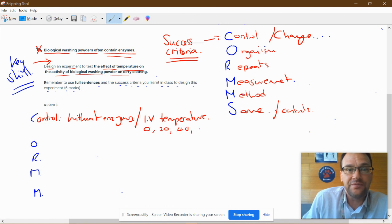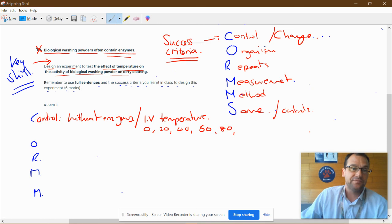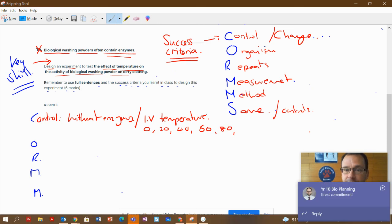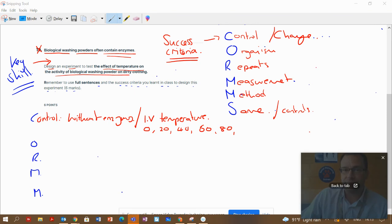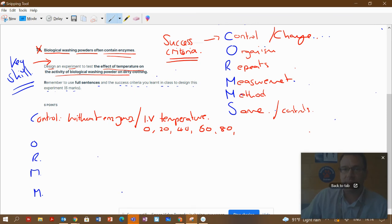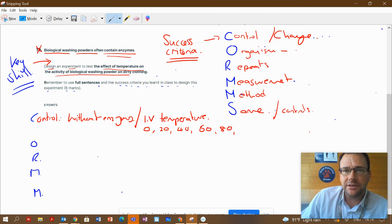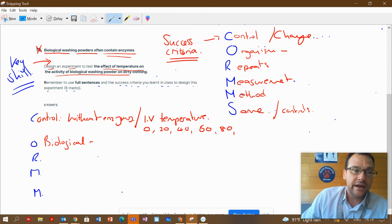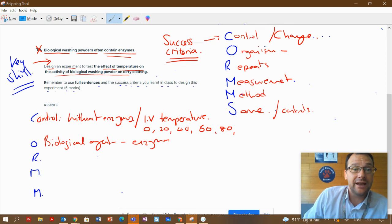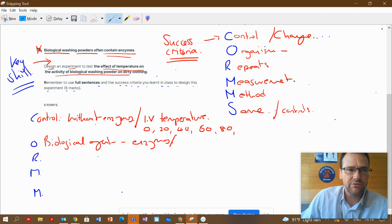The organism, in this case there aren't any organisms, but the biological entity, the biological agent here is the enzymes. Actually write that down. That's our organism or that's our biology that we're testing today.